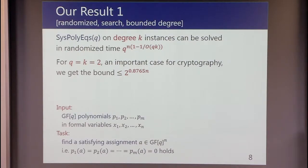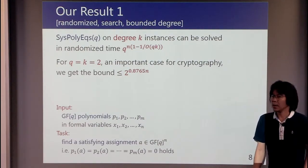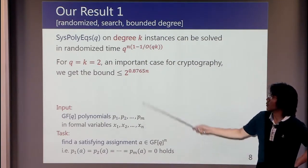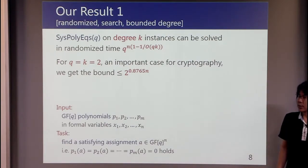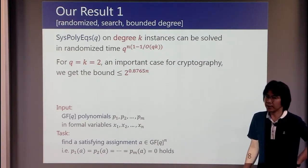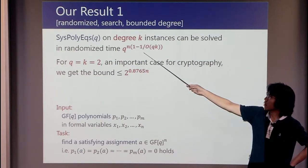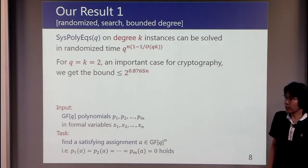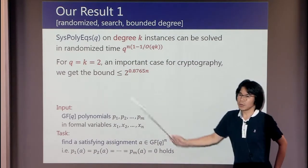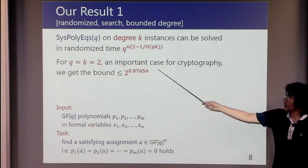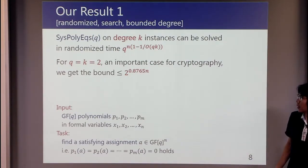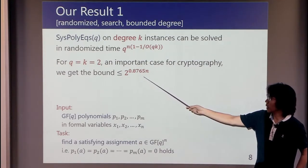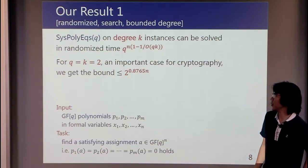This is our result 1. We showed SysPolyEqs(q) on degree 2 instances can be solved in randomized time q^(n(1-1/O(qk))). And in particular, for q and k equal to 2, this is an important case for cryptography. We get the bound of 2^(0.8765n).